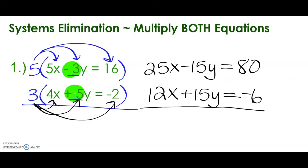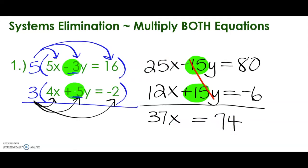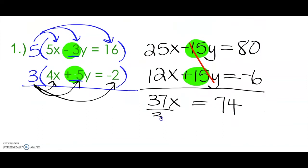So we created this situation now that when we combine negative 15y and positive 15y, we should be able to eliminate the y variable and solve for x. So 25x and 12x is going to give us 37x. Our y's eliminate and 80 minus 6 is going to give us 74. Then we just divide both sides of the equation by 37. And that is going to give us x equals 2.